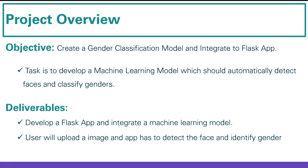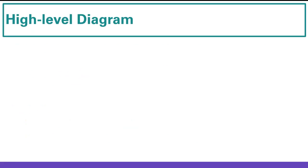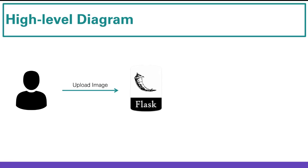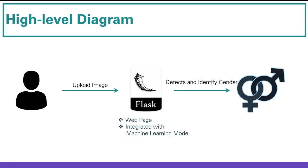The deliverable, or outcome of the project, is to develop a Flask app integrated with a machine learning model. As soon as a user uploads an image into your app, it has to detect the face and identify the gender. Let's look into the high-level diagram of the project: the user uploads the image into your Flask app, which is integrated with the machine learning model, and that will detect the face and identify the gender.